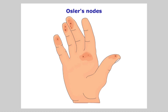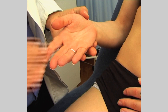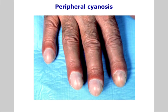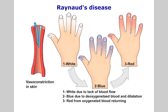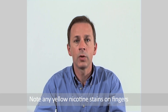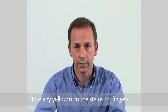Examine the fingertips and palms of their hands for Osler's nodes. These look like blood-filled blisters, which may be tender to touch. Note also the fingertips and nail beds for peripheral cyanosis. This could signify poor peripheral perfusion to the tissues, a cold patient, or suffering from Raynaud's phenomenon. Is the patient a smoker, and have you noted any yellow nicotine stains on their fingers?